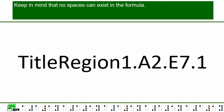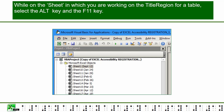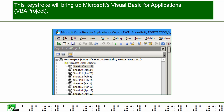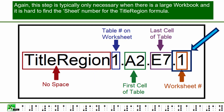Keep in mind that no spaces can exist in the formula. Note: if it is a large workbook with many sheets, you can use the Alt + F11 keystroke to open Microsoft Visual Basic for Applications. The sheet will be highlighted and show what the sheet number is for the title region formula. This step is typically only necessary when there is a large workbook and it is hard to find the sheet number.